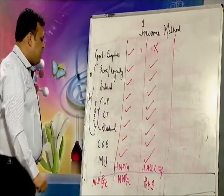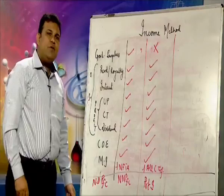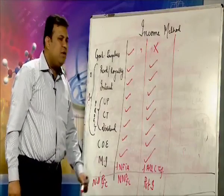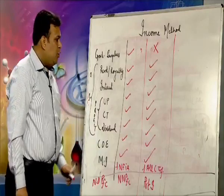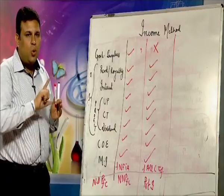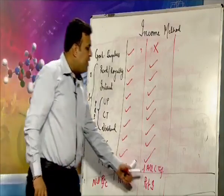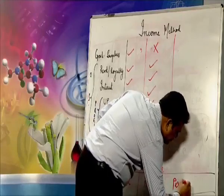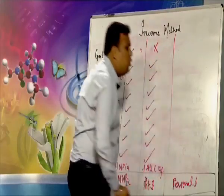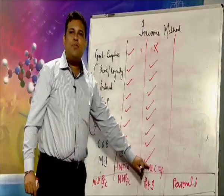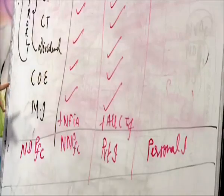There is a difference between domestic income, national income, and private income. Domestic and national income only talk about earned income — no unearned income. Whereas private income and personal income also include unearned income. Unearned income is transfer payment. Earned income is rent, interest, profit, compensation.